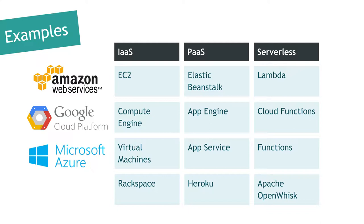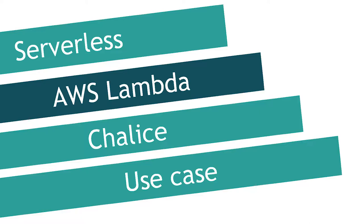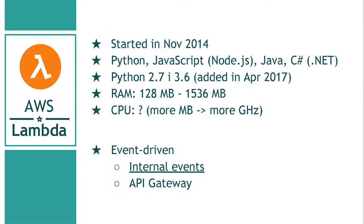Some examples of the most popular hosting platforms: for IaaS, probably the most popular is EC2 from Amazon. For PaaS, you've probably heard of Google App Engine or Heroku. Serverless is available on all major platforms, and there is also the open-source platform Apache OpenWhisk. But the most popular is AWS Lambda — let's see more details about this.